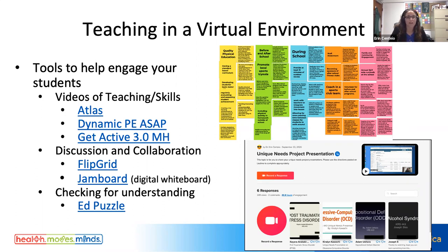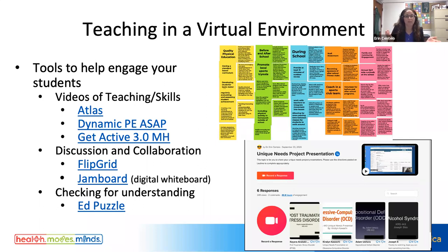Students go through the online module, watch the skill videos in Get Active 3.0, then replicate the video — making their own video and turning it in — and that's how skill grades for competency are assessed. For discussion and collaboration, two tools beyond a standard forum: Jam Board is a digital whiteboard everyone can access simultaneously, useful for activities like gallery walks. Students add sticky notes to components of a CISPAP, for example, which works well online in Zoom.